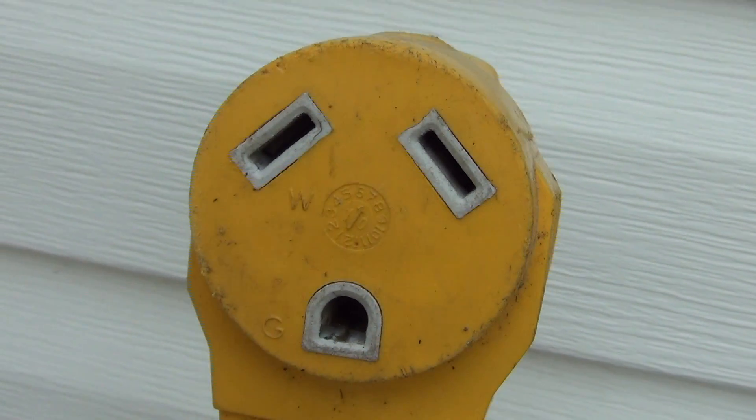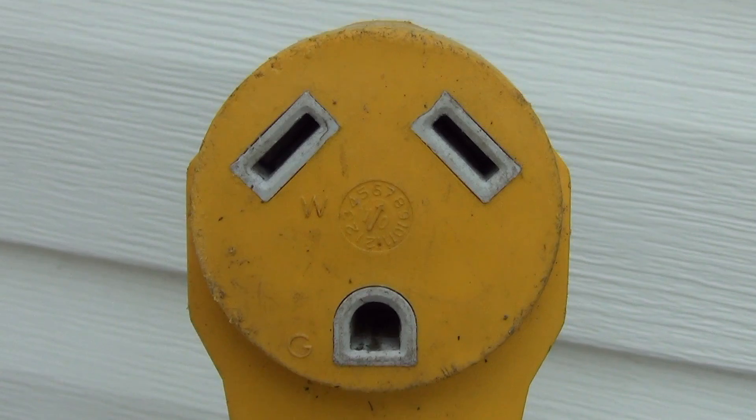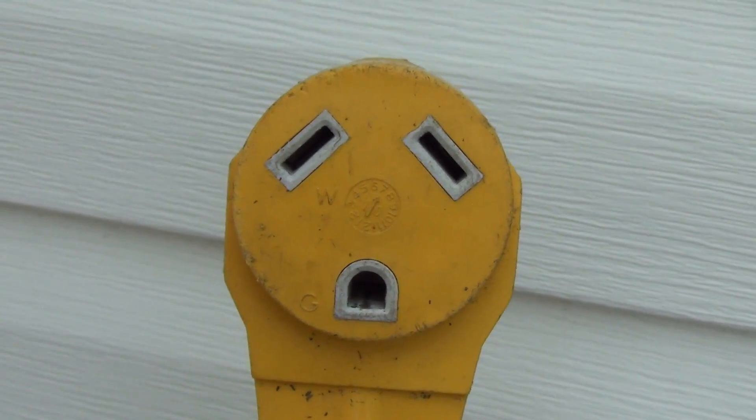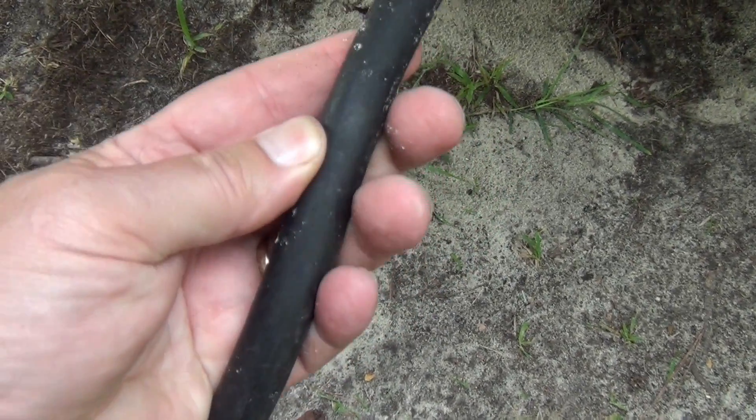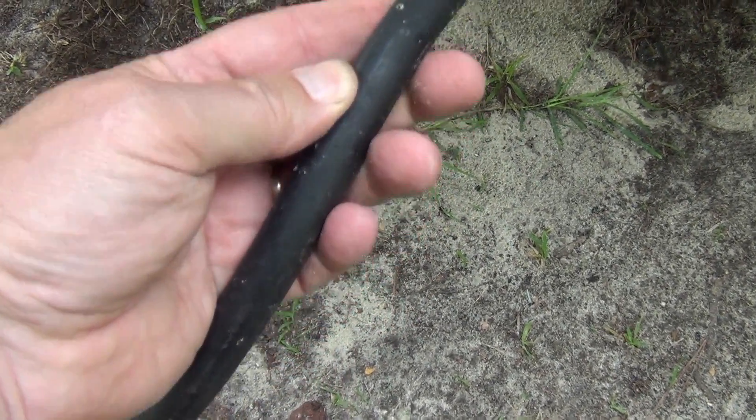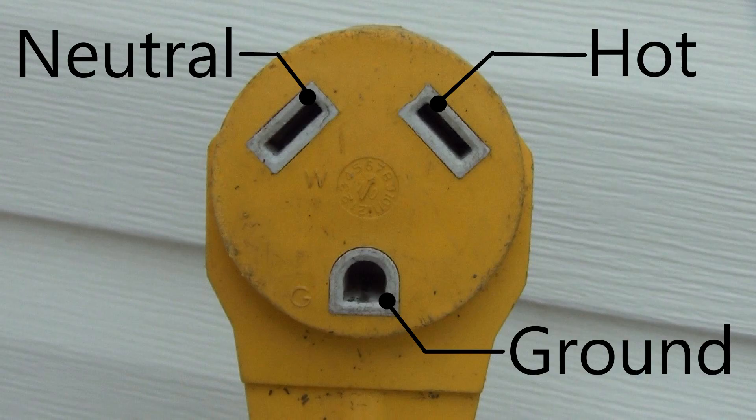This is a 30 amp outlet. Most campers under 28 feet are wired for 30 amps, and will use this outlet. The plug-in cord for this is heavier than for the 20 amp outlet, as it needs to carry more juice. This receptacle also has three slots, a hot, a neutral, and a ground.